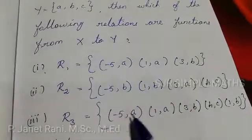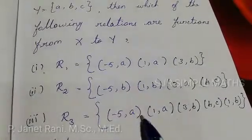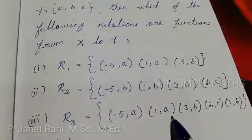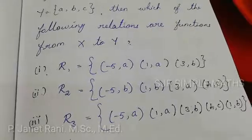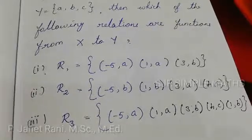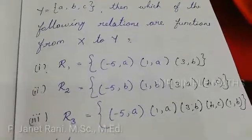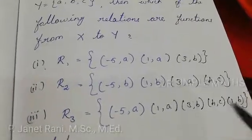R3 is equal to {(-5, a), (1, a), (3, b), (4, c), (1, b)}.